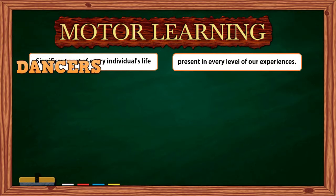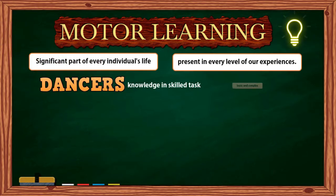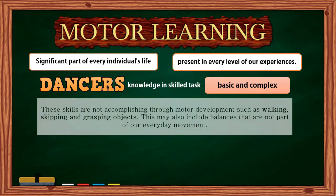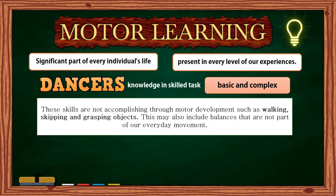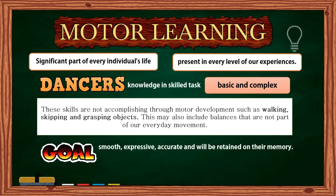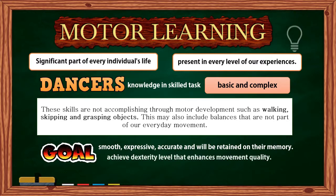Motor learning means that dancers should have knowledge in skilled tasks, both basic and complex. These skills are not accomplished through motor development such as walking, skipping, and grasping objects. This may also include balances that are not part of our everyday movement. The goal of dance teachers is to teach these skills so dancers can execute them in a smooth, expressive, accurate manner that will be retained in their memory. The objective is to achieve a dexterity level that enhances movement quality.